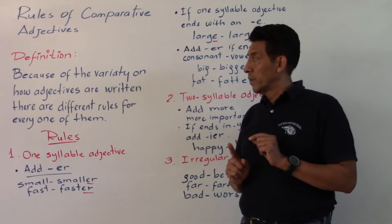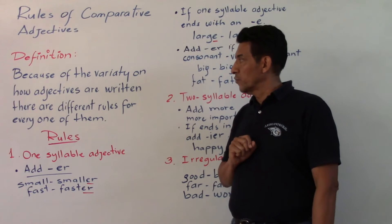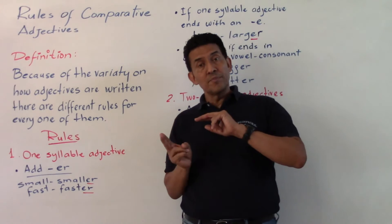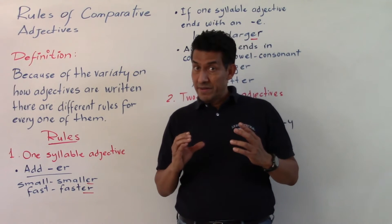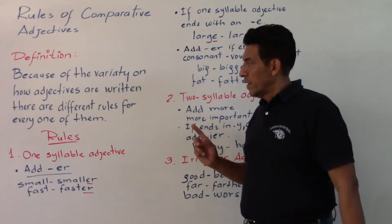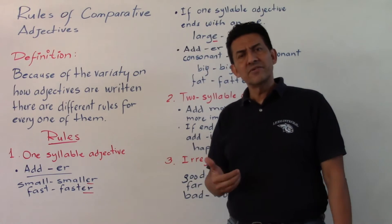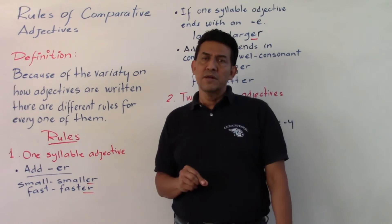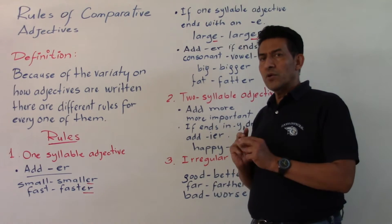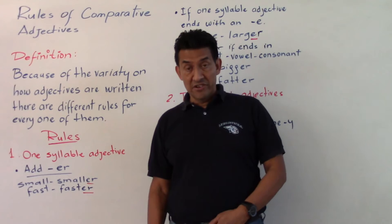The rules of the adjective include several categories because there is great variety, and each one of them should have their own rule. Rule number one: one syllable adjectives. A one syllable adjective is one that has a single sound — for example, slow, fast.